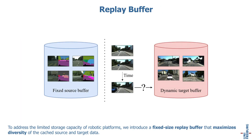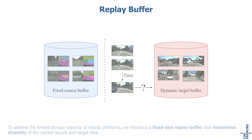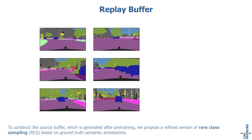To address the limited storage capacity of robotic platforms, we introduce a fixed-size replay buffer that maximizes the diversity of the cached source and target data. To construct the source buffer, which is generated after pre-training, we propose a refined version of rare class sampling based on ground-truth semantic annotations.